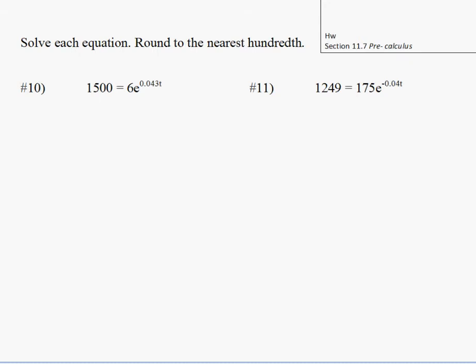Number 10, if we can get that e to the exponent by itself, it's going to be helpful. So if we can subtract 6 from both sides, 1500 divided by 6 is 250.